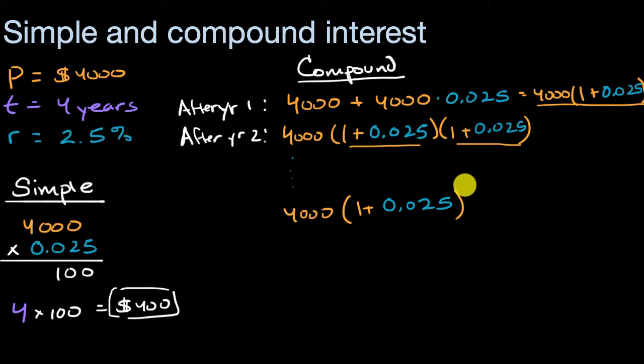We're going to be doing this over four years. Now this might look very familiar. You might've seen the formula of the amount that you're going to get is going to be your principal times one plus your rate to the time, to however many times you're compounding it to that power.